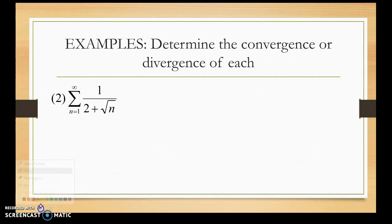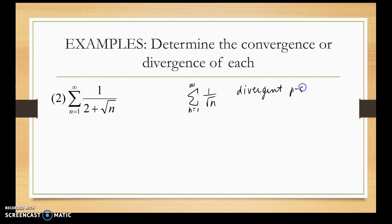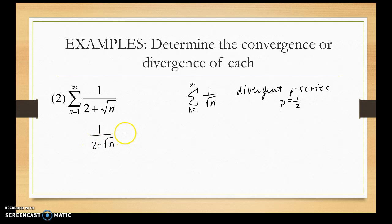Determine the convergence or divergence of this next series. I'm going to compare it to 1 over the square root of n, which is a divergent p-series where p equals 1/2. When I look at the term-by-term comparison, the terms of this series are less than the terms of 1 over √n. This test will fail because it doesn't meet the requirements for showing divergence.